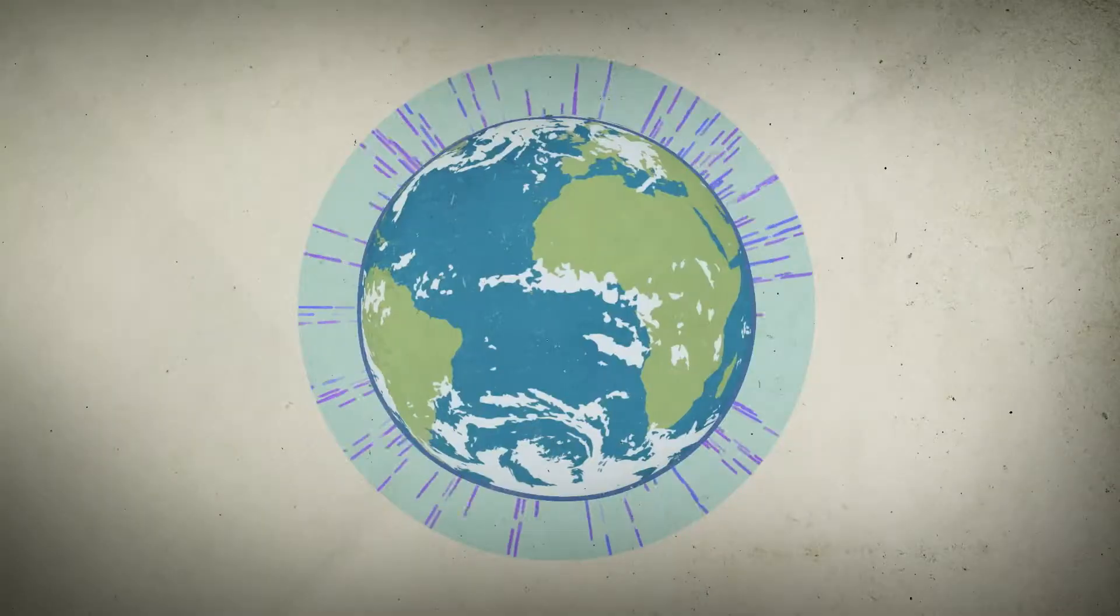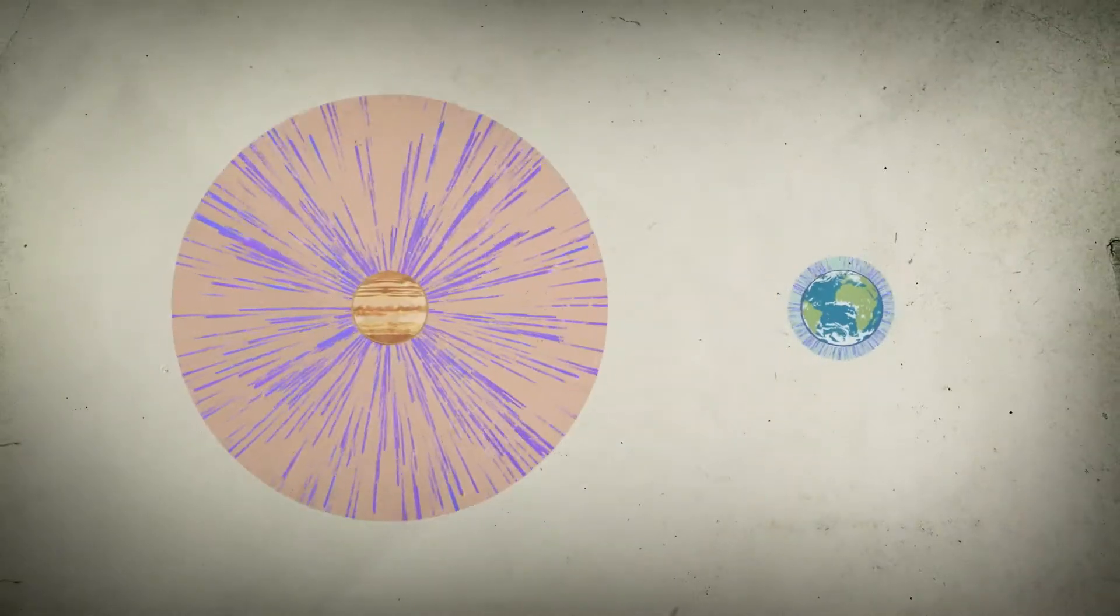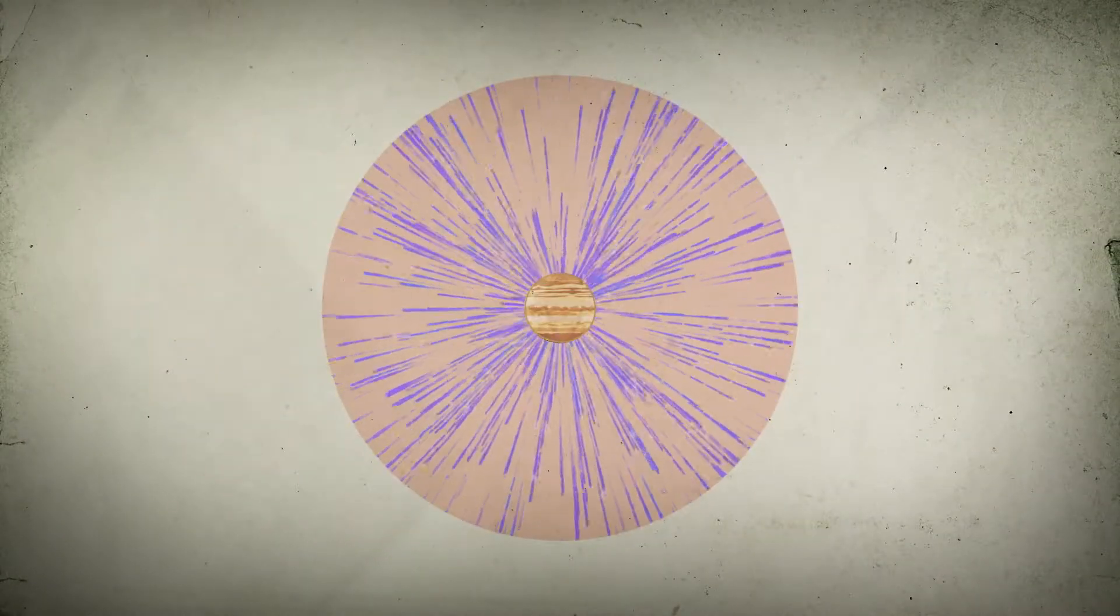So just as every planet has a gravity field, we think that every planet has a weak electric field. So we went looking for Venus's electric field and boy oh boy did we find it. It turns out that Venus's electric field is at least five to ten times stronger than at Earth. It's a monster of a force.